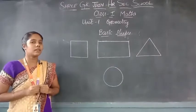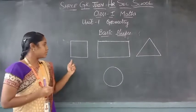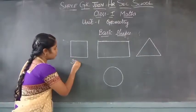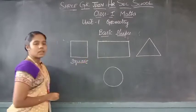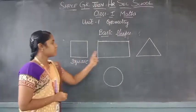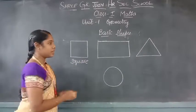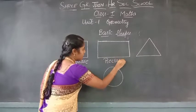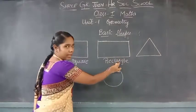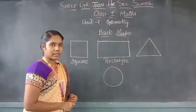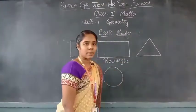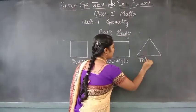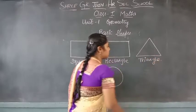Now let us learn the names of these basic shapes. The name of the first shape is square — S-Q-U-A-R-E, square. Then the name of this shape is rectangle — R-E-C-T-A-N-G-L-E, rectangle. Now the name of the third shape is triangle — T-R-I-A-N-G-L-E, triangle.